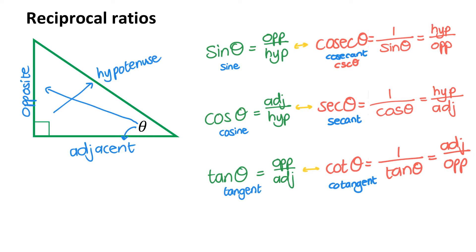Generally, people remember the ratios for sine, cos, and tan using SOH CAH TOA. A memory trick you can use to remember which ratios go with which: look at the first letter of each original ratio — sine, cos, and tan — and look at the third letter of each reciprocal ratio. Those letters are the same. So sec's third letter is C, and that is a reciprocal ratio of cos.